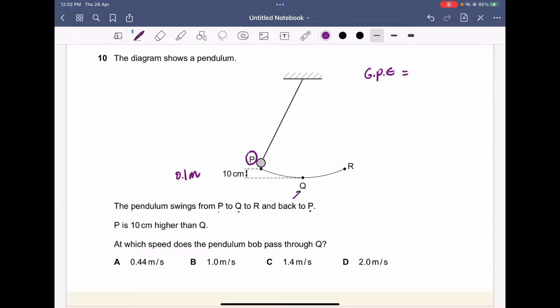So the gravitational equals to the kinetic. The formula is mgh - the mass times the gravitational field strength and height - equals to half mass times velocity squared.